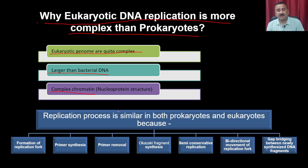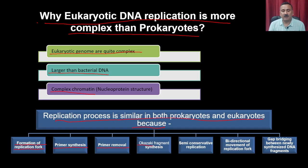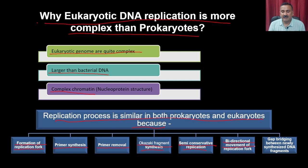Despite these differences, the replication process in both prokaryotic and eukaryotic systems involves some basic common steps: formation of the replication fork, primer synthesis, primer removal by DNA Pol I (in prokaryotes), formation of Okazaki fragments, semi-conservative replication mode, and bidirectional movement of the replication fork. Gap bridging between newly synthesized DNA fragments is also required with the help of DNA Pol I and DNA ligase.